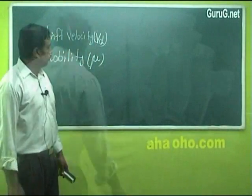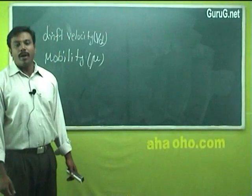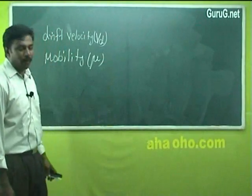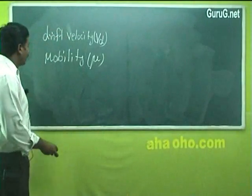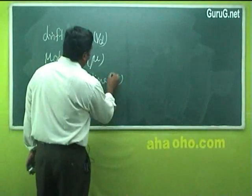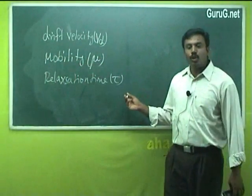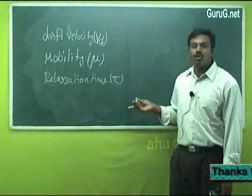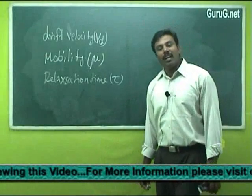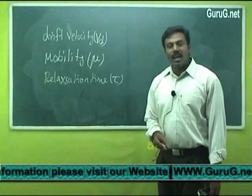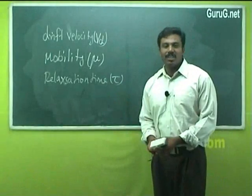The next definition is mobility, represented by the Greek letter mu (μ). Mobility is the average drift velocity acquired by the electron per unit electric field. Next is relaxation time, represented by the Greek letter tau (τ). Relaxation time is the time taken by the electron to come back to its equilibrium position after disturbance due to the application of the electric field.